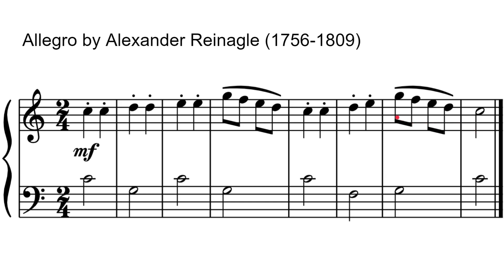Here's another nice example: Allegro by Alexander Reinagle. Look at the left hand. We're in the key of C, so our tonic is C and our dominant is G. The left hand is literally going tonic–dominant–tonic–dominant–tonic–subdominant–dominant–tonic. Very easy to remember — once you know it's in the key of C, you're not trying to remember random notes; you're remembering a very basic structural pattern. In the right hand we start on the tonic, step up, and then go from dominant down to tonic; step up again, dominant down to tonic. It stops being a lot of random notes to remember and becomes a pattern that's quite easy to remember.